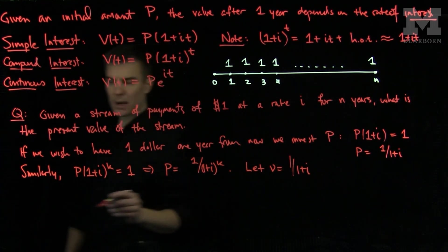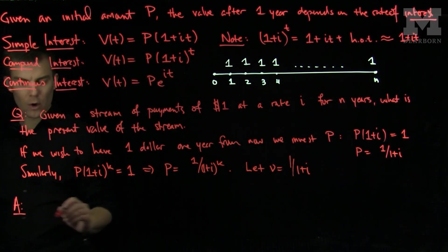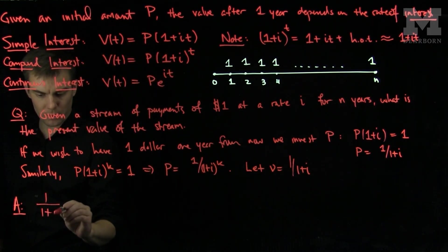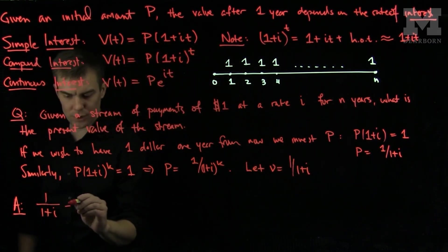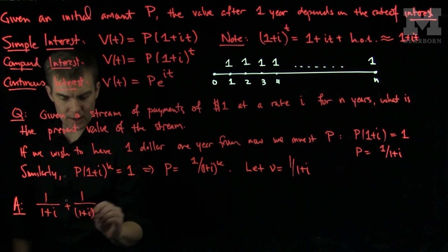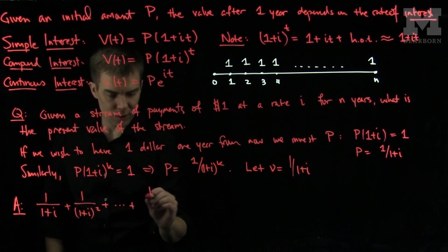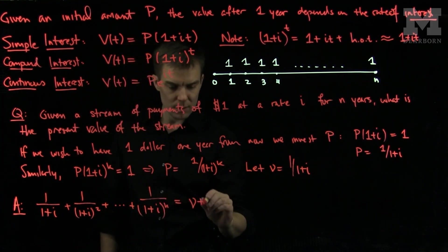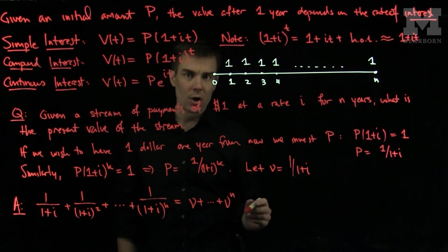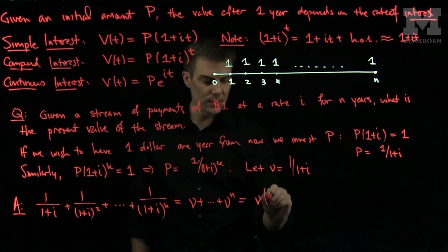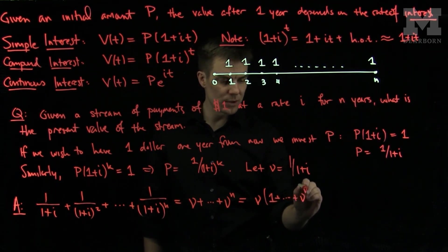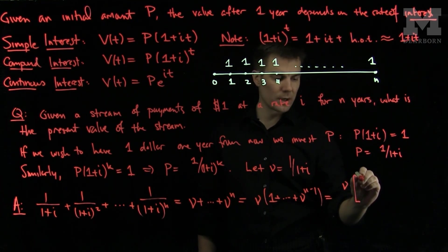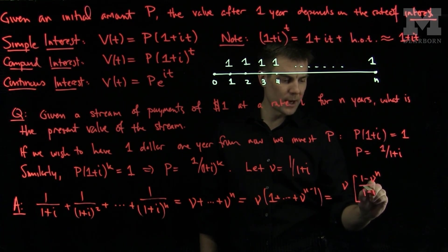We see the answer to our problem is the following. In order to make $1 in one year, I will have to invest 1 over 1 plus i. In two years, I'll have to do 1 over 1 plus i squared. And at time n, I'll need 1 over 1 plus i to the power n, which we can write in terms of nu as nu plus nu to the power n, which is a geometric sum. I can write this as nu times 1 plus nu to the n minus 1, and the geometric sum formula gives nu times the quantity 1 minus nu to the n over 1 minus nu.